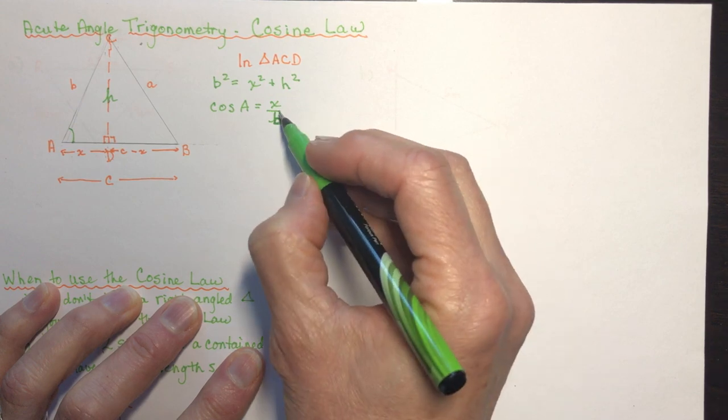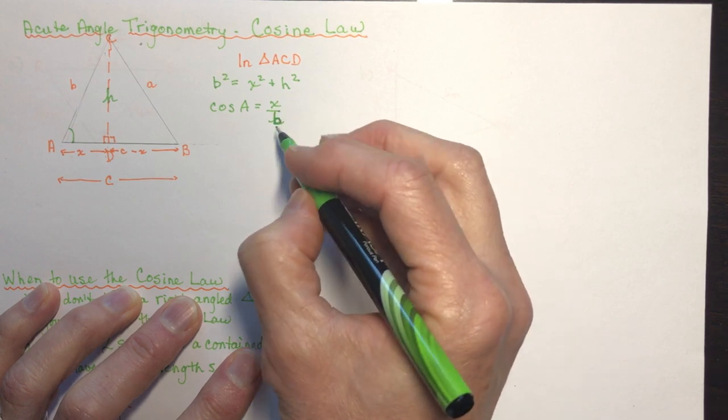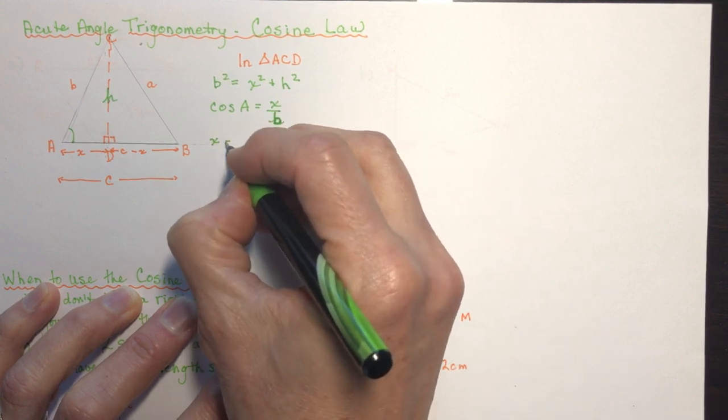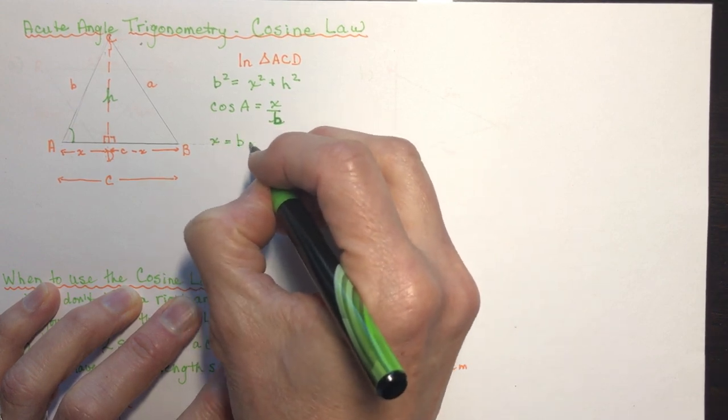That means x is going to be b times the cosine of A.